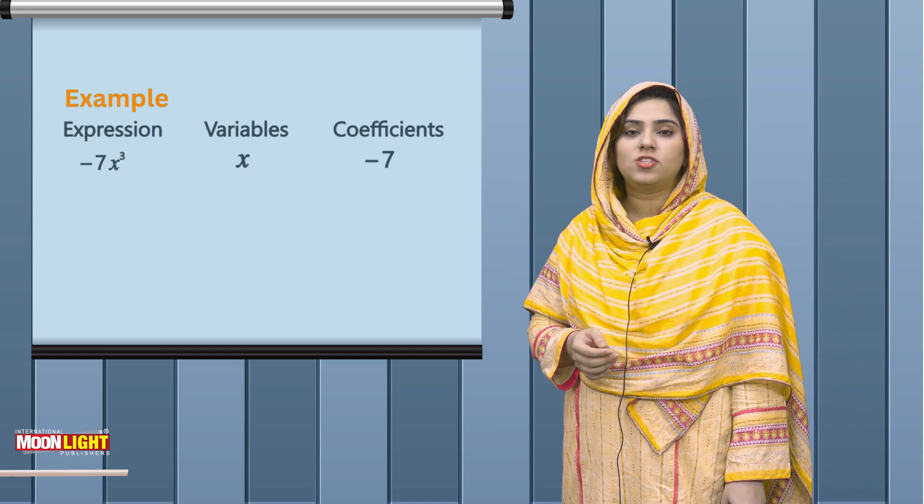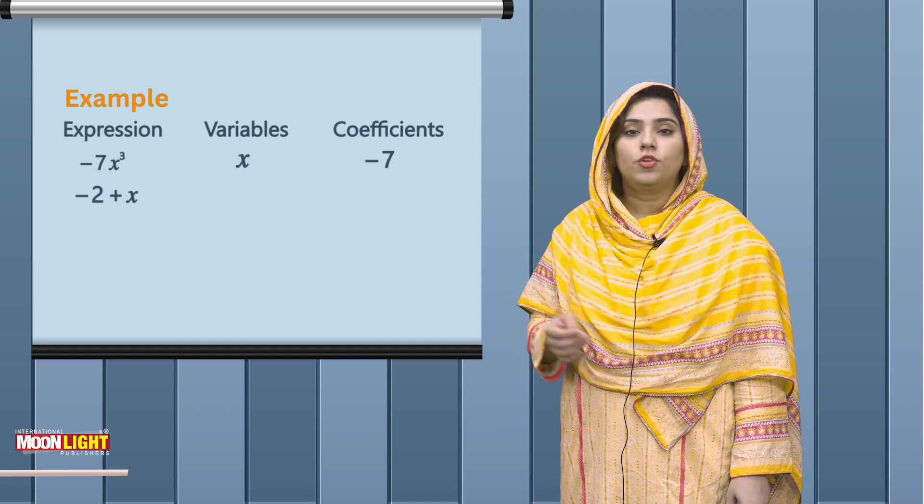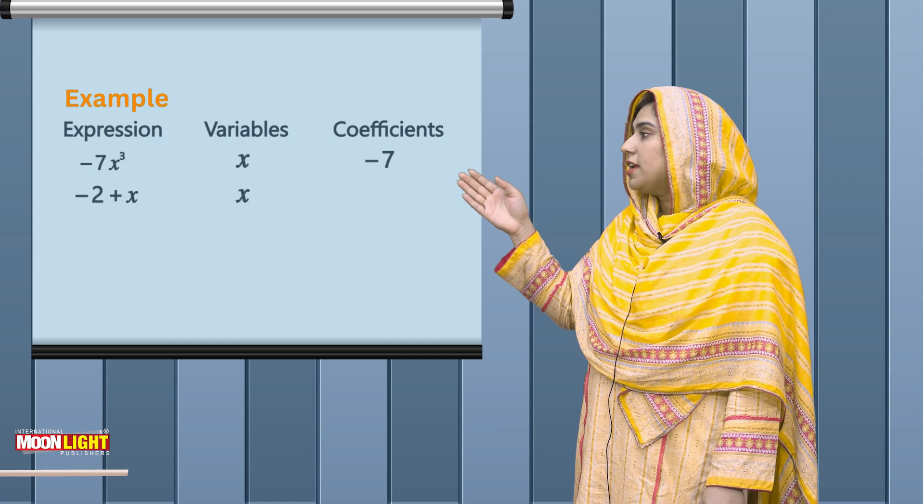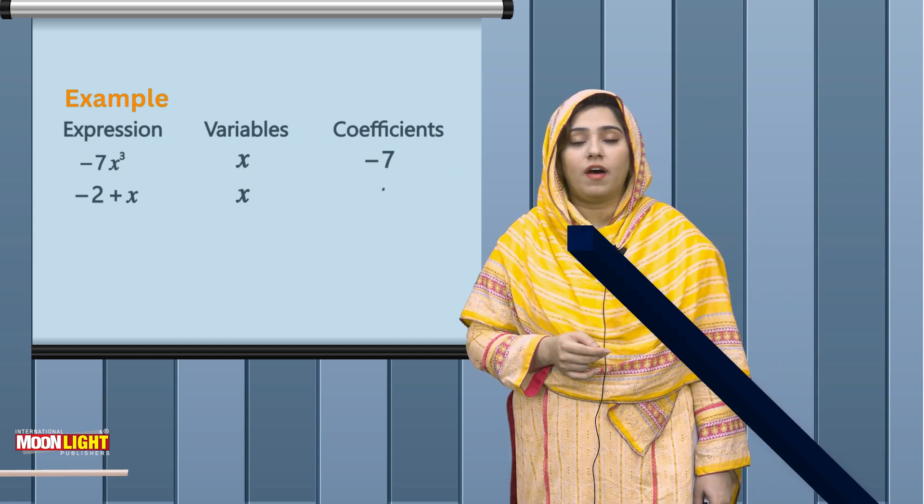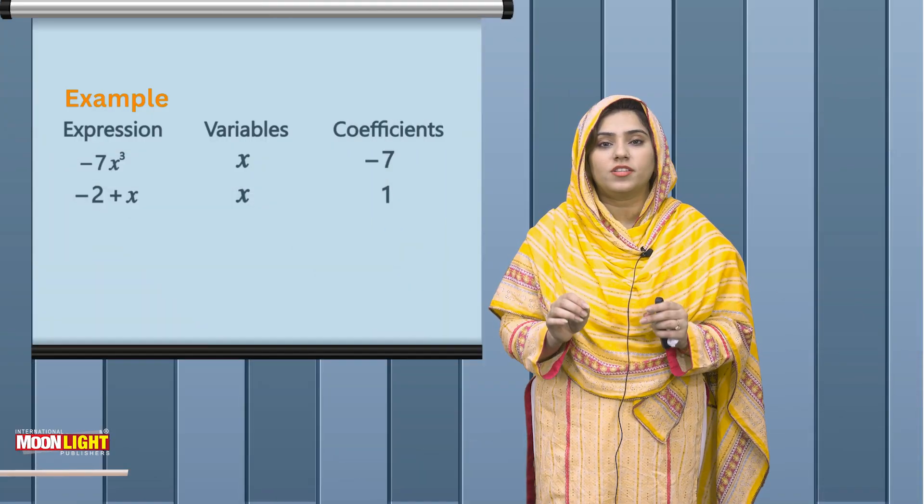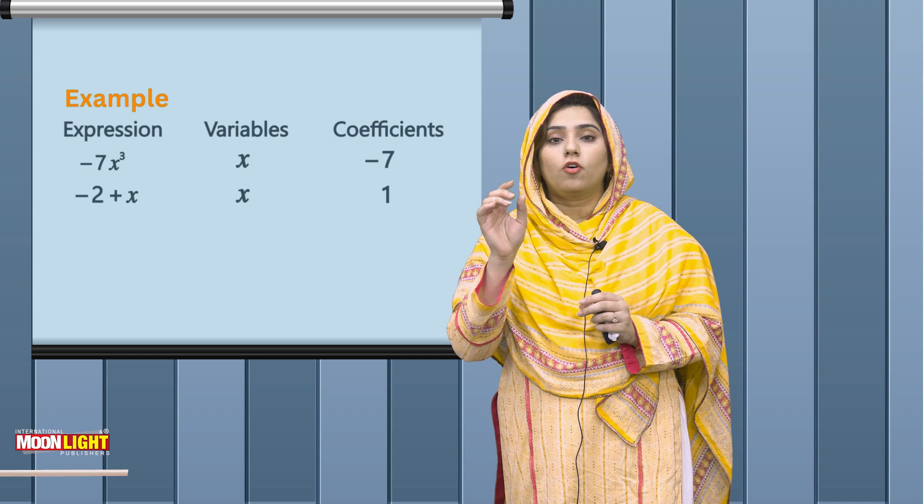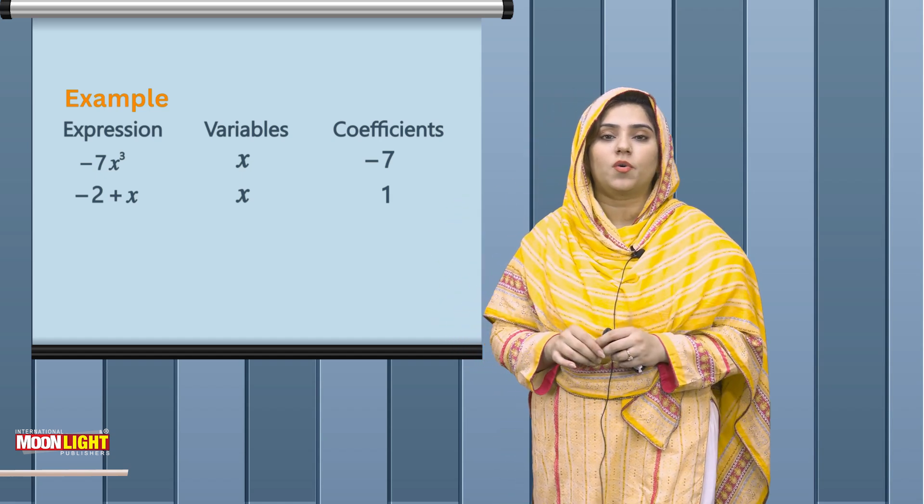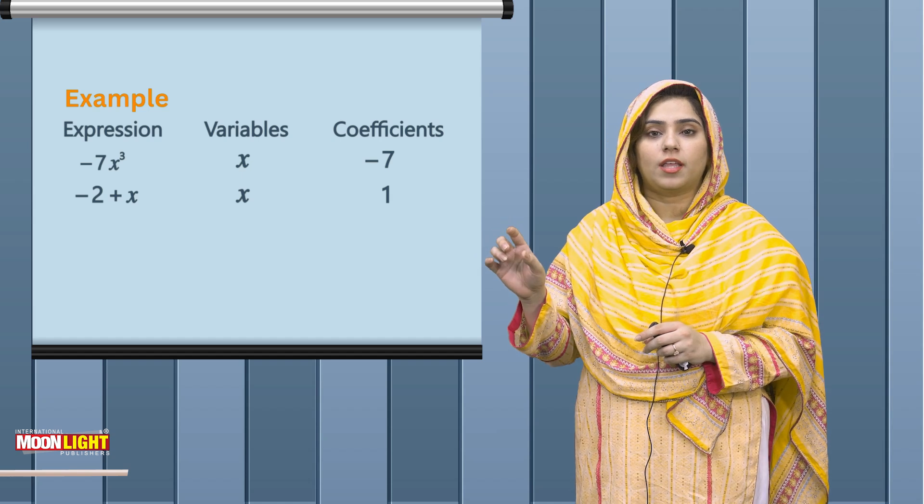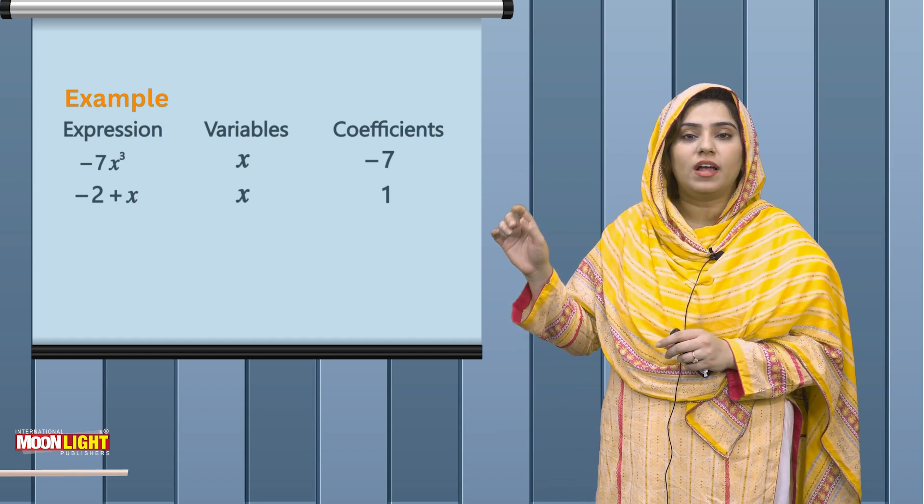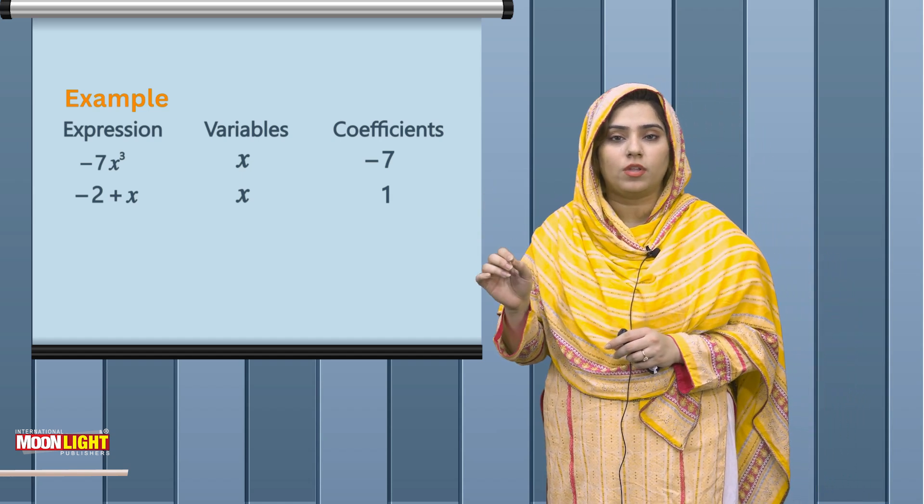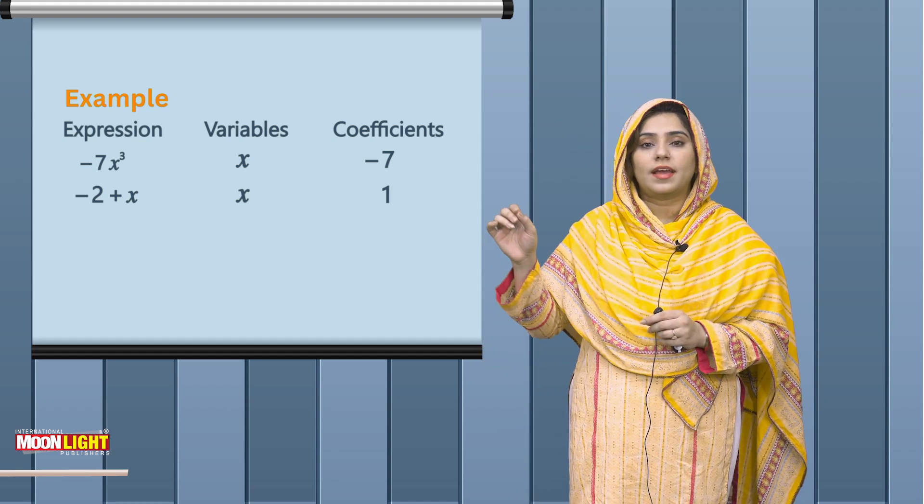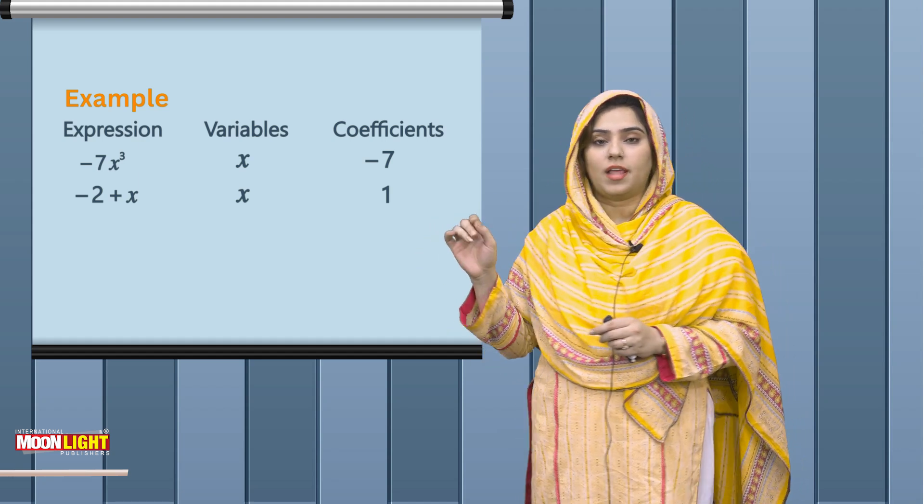Next, if I talk about minus 2 plus x, then the variable is x. Minus 2 is a constant, not a coefficient. Coefficient is always with x. The variable is x, and the coefficient here is 1, because when x has no value written, it means 1.